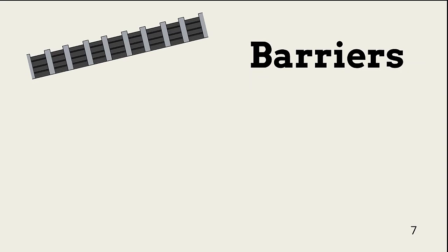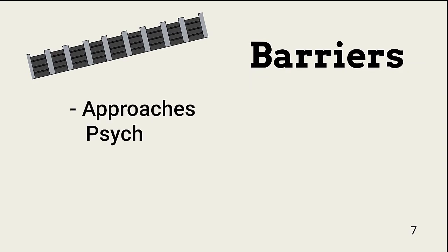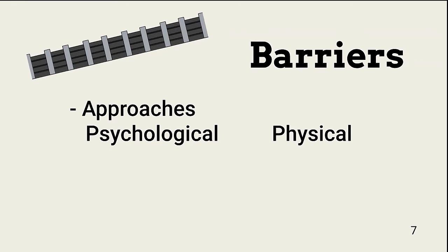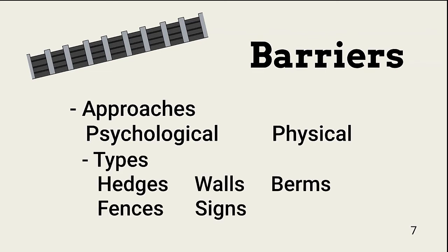Deterrence requires barriers — psychological, physical, or both. An organization should never expect one or more barriers to stop a determined intruder. The right barriers deter the less motivated and delay the highly motivated. Barriers begin at the site perimeter. The site barrier, like all physical controls, depends on the associated risk. Site barriers include hedges, walls, berms, fences, signs, and a combination of these.